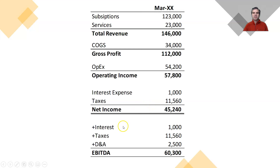So to reach EBITDA, we take our net income and add back interest expense, add back our taxes, and add back our depreciation and amortization, resulting in an EBITDA of $60,300 in this case.